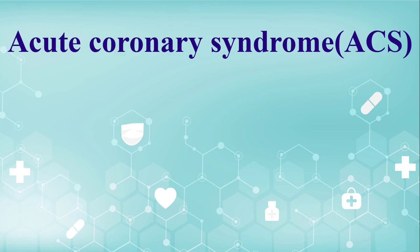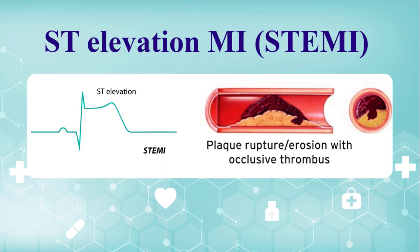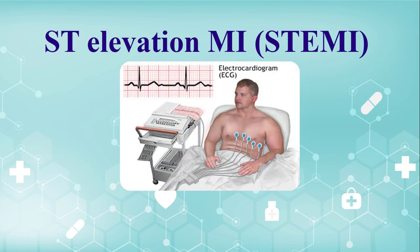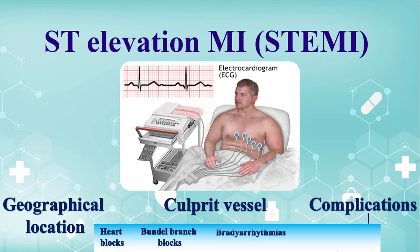Acute ischemia, also known as acute coronary syndrome, is caused by rupture of an atheromatous plaque that leads to partial or total occlusion of the coronary artery lumen. ST elevation MI is the marker of complete obstruction of the vessel lumen that results in stop of blood flow. Surface electrocardiogram is the only modality that can help us diagnose ST elevation MI. It can identify the geographic location of the MI and the culprit vessel; additionally, it can help us identify certain complications of acute MI, including heart blocks, bundle branch blocks, bradyarrhythmias, and tachyarrhythmias. Thereby, surface electrocardiogram is the most valuable tool in diagnosing and managing ST elevation MI.